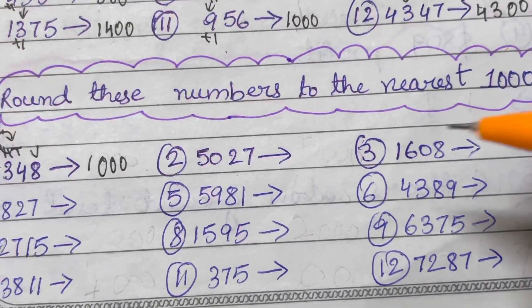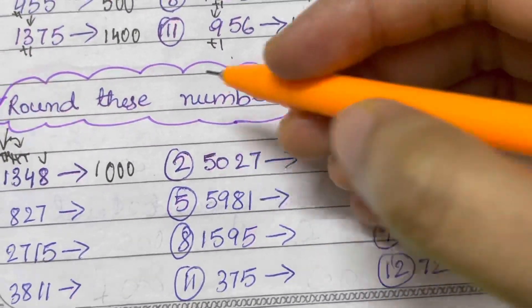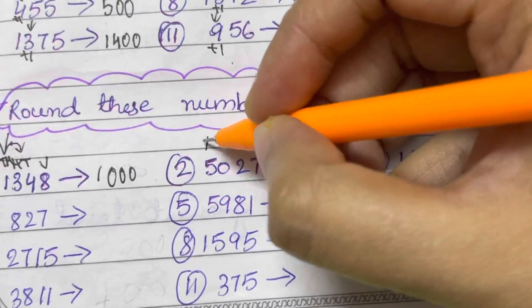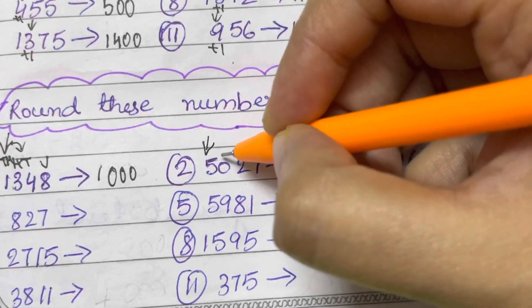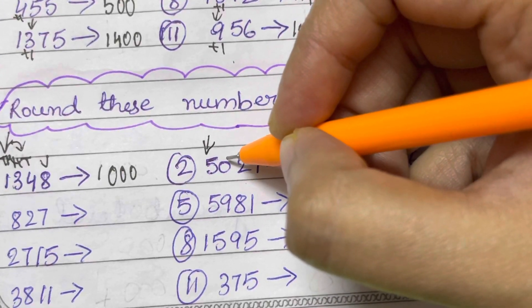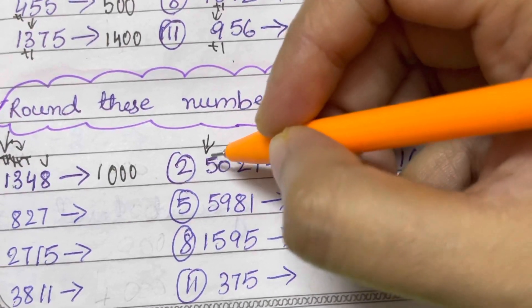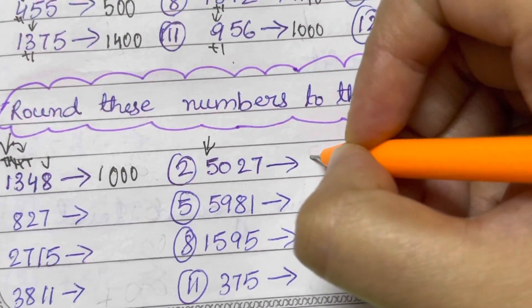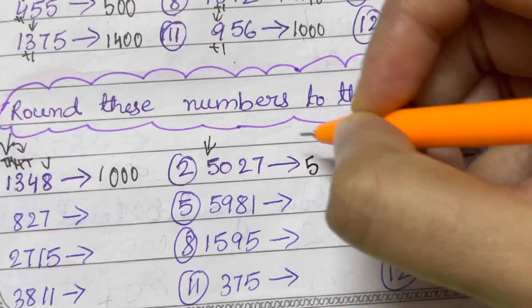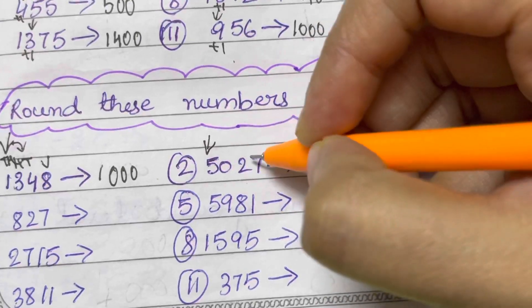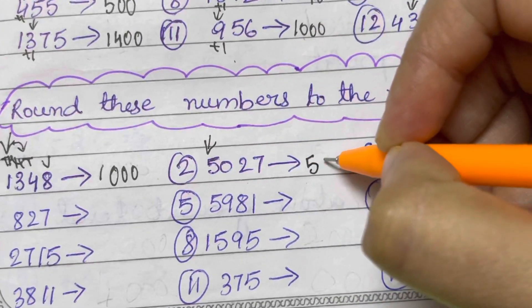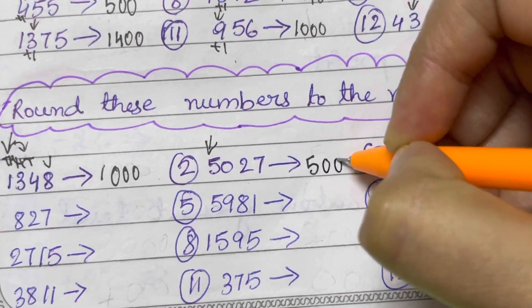5,027. The thousands place is 5. The digit after that is 0, which is less than 5. So 5 remains unchanged and all the rest of the digits are replaced by zeros.